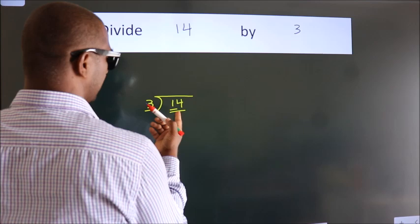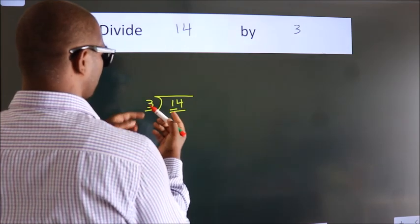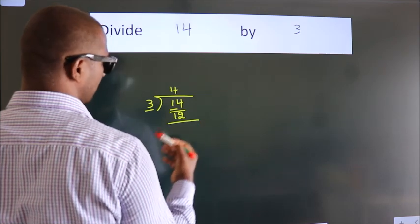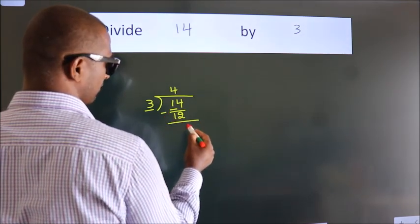A number close to 14 in the 3 table is 3 times 4 equals 12. Now we should subtract. We get 2.